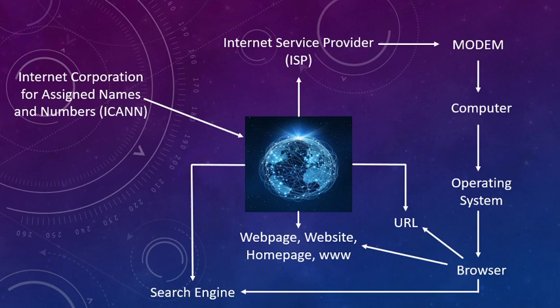This is the chart I have prepared so that you can understand in a better manner. At the center you can see an internet cloud where every individual is accessing any resource across the globe. In the form of a wireless wave, it is showing how internet connectivity works globally.